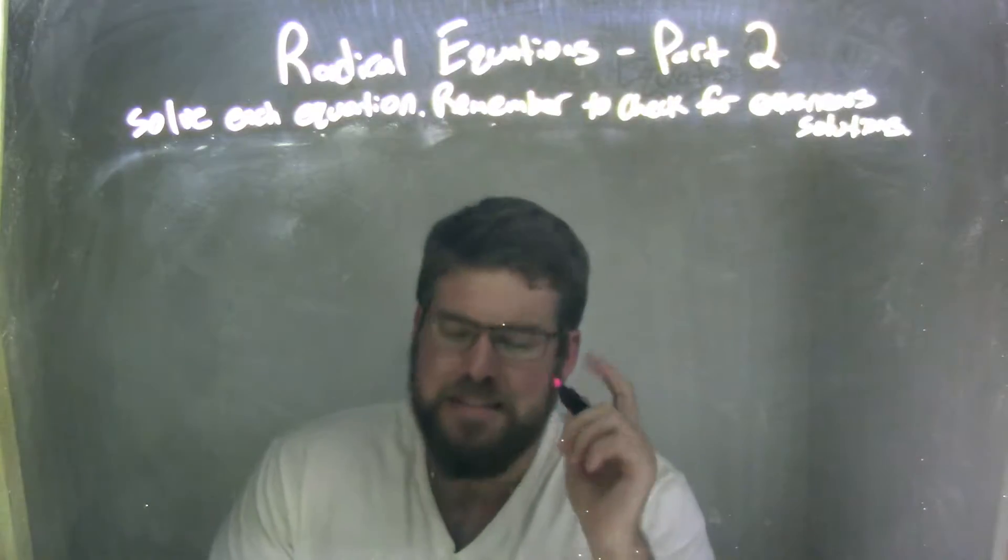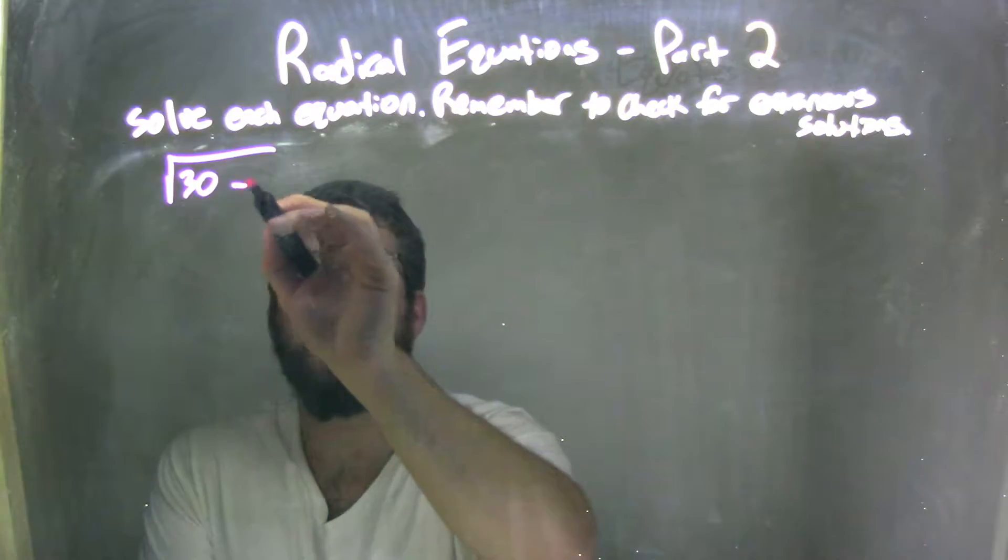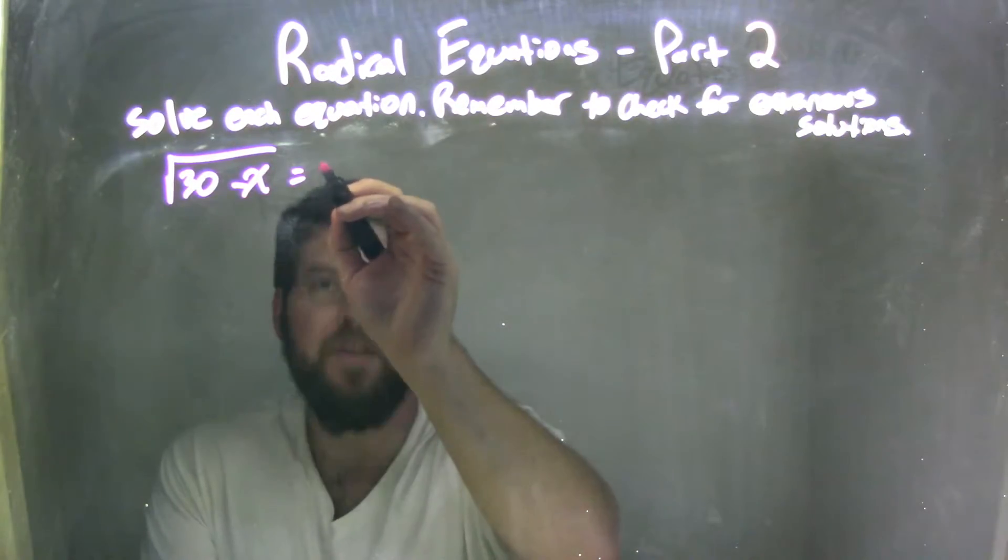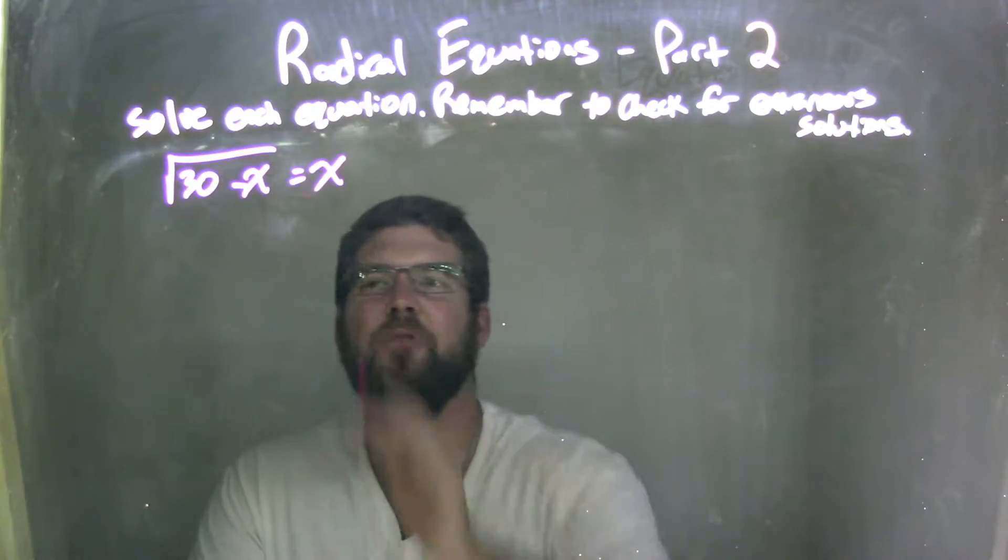So if I was given this equation, square root of 30 minus x equals just x, well, I want to square both sides to get rid of that square root.